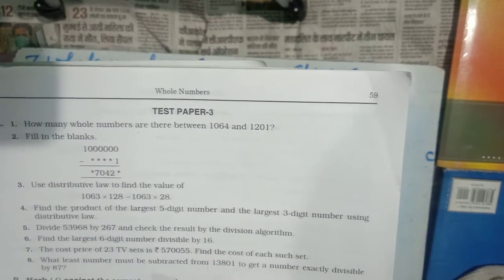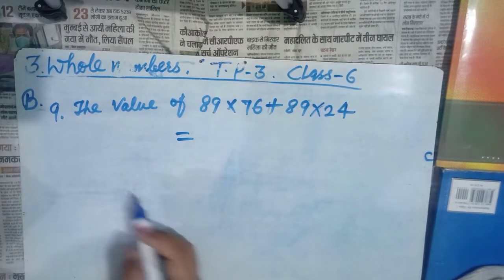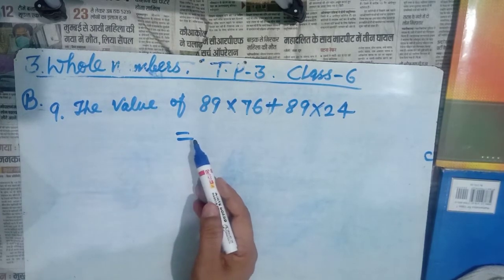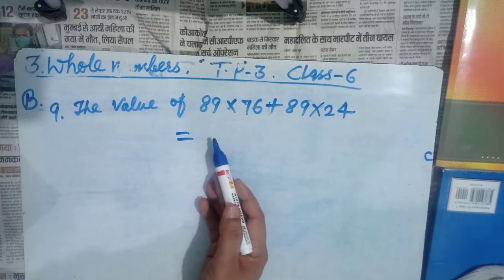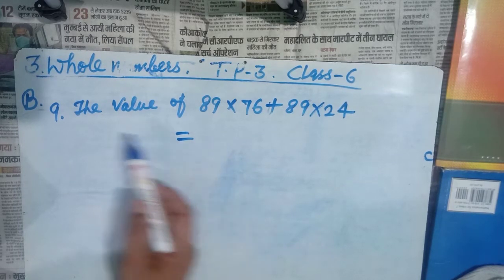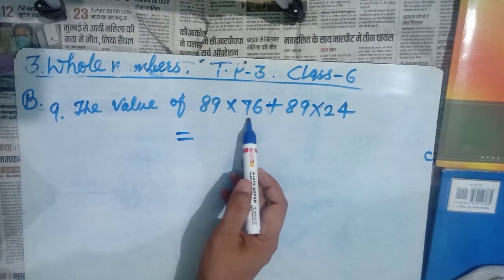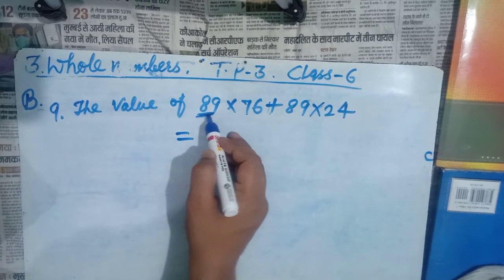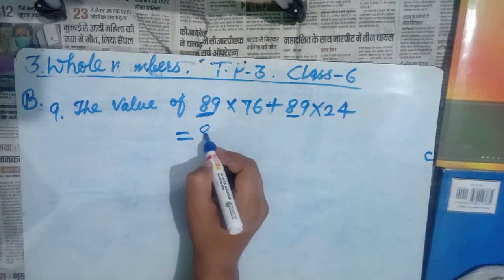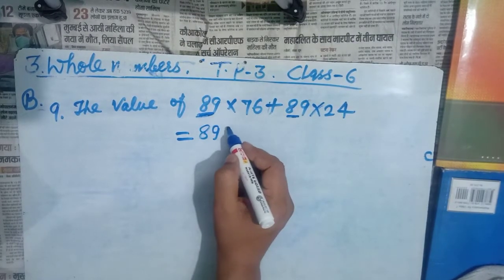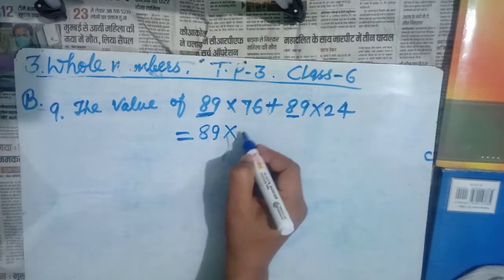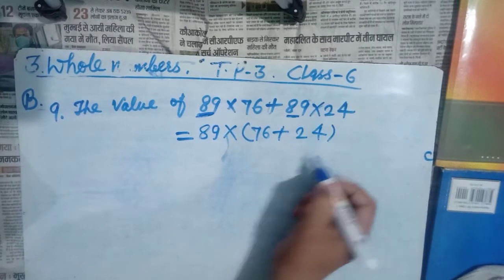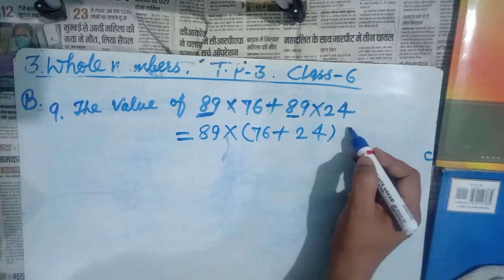Question number 9: the value of 89 × 76 + 89 × 24. This is a multiple-choice question with four options. Notice that 89 appears in both terms. By the distributive law, we can take 89 out: 89 × (76 + 24).